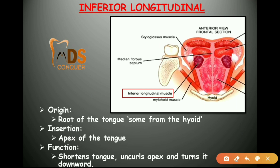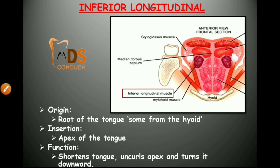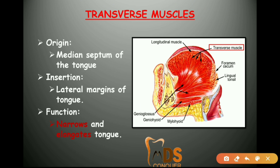The inferior longitudinal muscle originates from the root of the tongue and partly from the hyoid bone. Its function is to shorten the tongue and uncurl the apex — the opposite of the superior longitudinal, which curls the apex. The transverse muscle originates from the median septum and inserts into the lateral margins of the tongue; its function is to narrow and elongate the tongue.